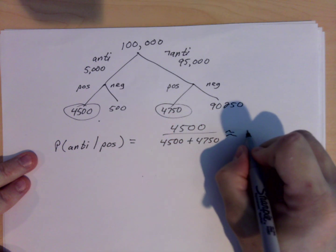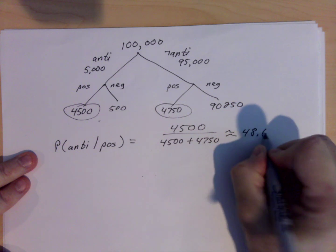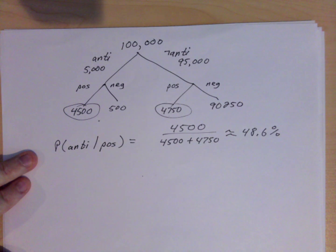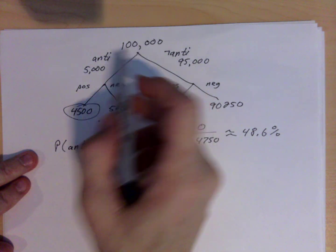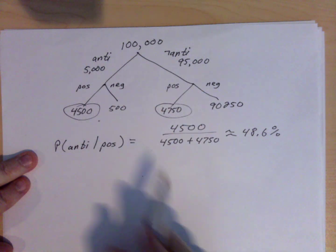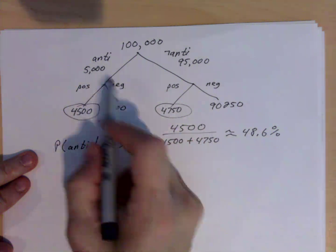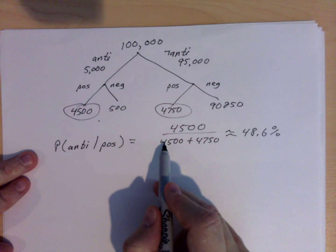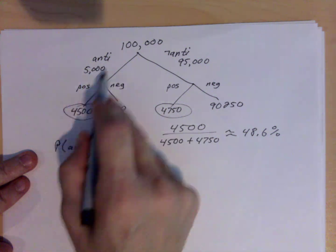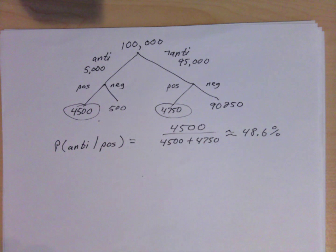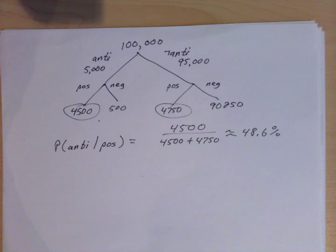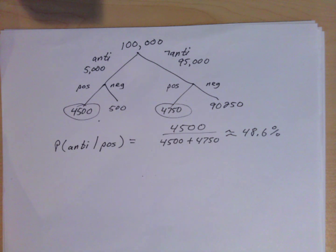And so once again this is about 48.6%. And so I prefer this, as I stated earlier, because it's easy for me to see how the numbers are being split. And also in particular to see this and say, oh, here's all the positives, 4,500 plus 4,750. Of those, 4,500 are those that truly have antibodies. So it's the ratio of these that we're using here. And so that's how the CDC comes at their numbers.